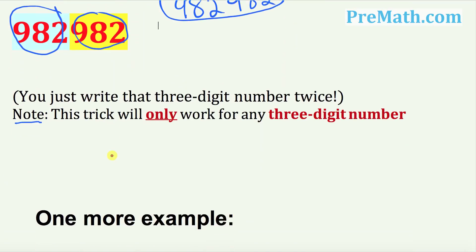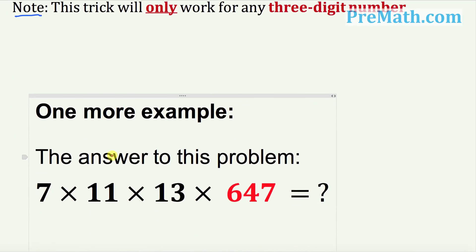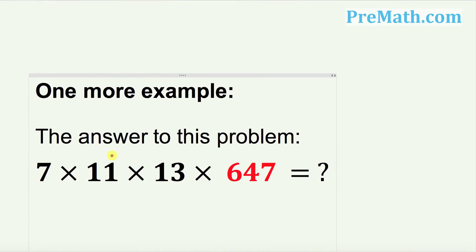Let's focus on one more example and see, can you give me the answer this time? So let's talk about this problem right now. Once again we are asked to multiply 7 times 11 times 13 by a three-digit number, which is 647.